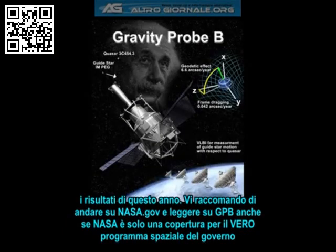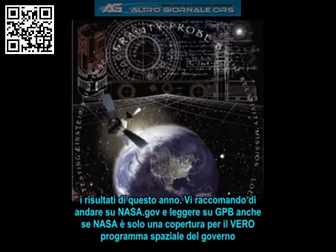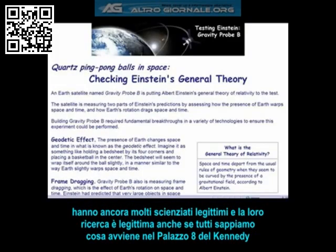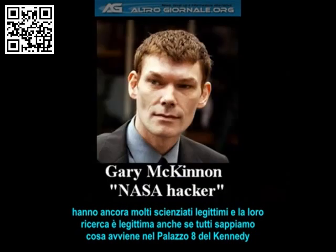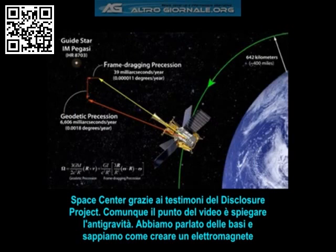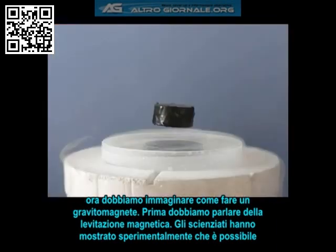I recommend you go to nasa.gov and read up on Gravity Probe B, even though NASA is basically just a PR-friendly cover for the government's real space programs. They still have a lot of legitimate scientists working for them, and their research is still legit. But the point of this video is to explain anti-gravity. We've already gone over the basics and we know how to make an electromagnet — now we need to figure out a way to make a gravitomagnet. But first, we need to talk about magnetic levitation.